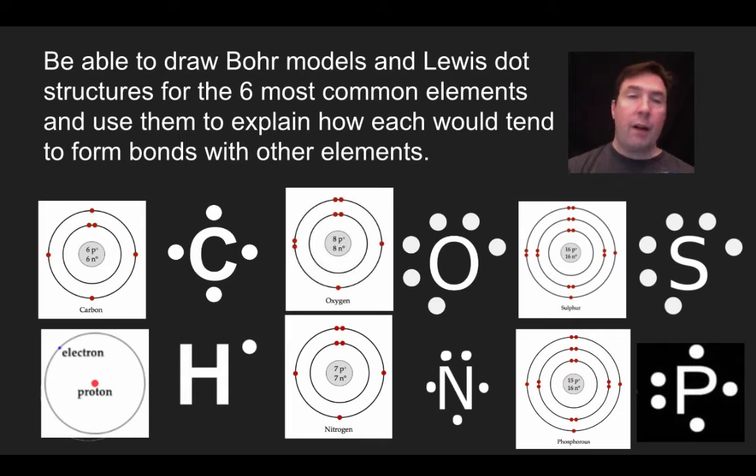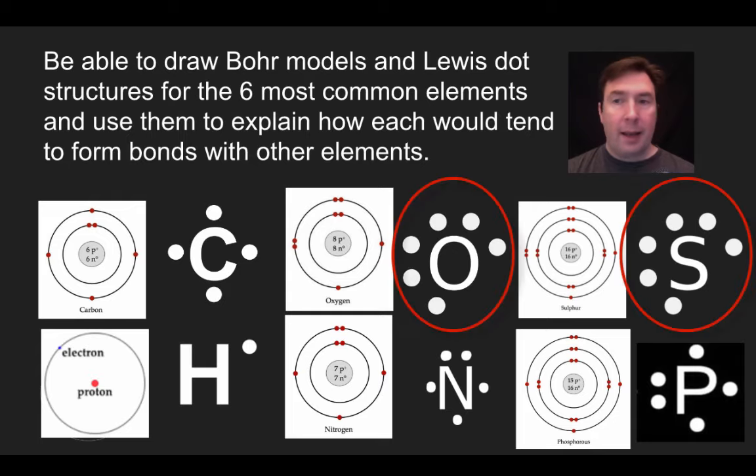Now, when we move over to sulfur and phosphorus, what we see is these are slightly larger. We have 16 protons, 16 neutrons, and sulfur, atomic mass of 32. We see that there's two electrons in the first electron shell, eight in the next shell, and then we see six in the next shell. So when we do our Lewis dot structure, it's very similar to oxygen. The only difference is that it has an S instead of an O as its atomic symbol, but there's the same number of valence electrons, so it is six dots around the outside.